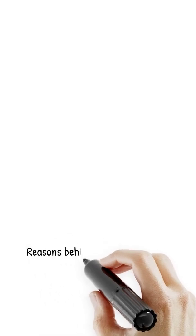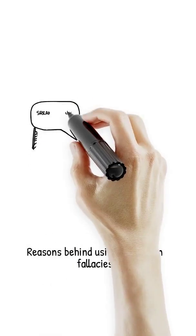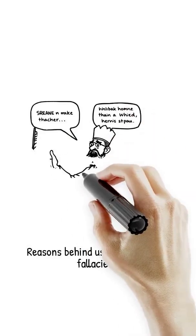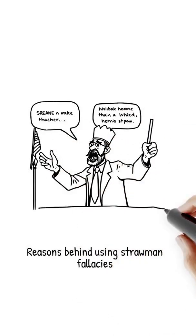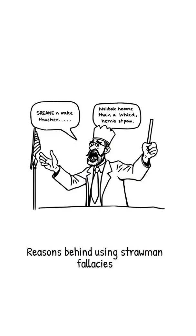Why do people use strawman fallacies? They're powerful. First, emotional appeal — calling something anti-Semitic stirs outrage, rallying audiences against the bad guy. Second, dodging complexity — it's easier to slam hate than debate international law. Third, polarization — it paints opponents as bigots, boosting clicks and political points, like in heated 2025 campus protest coverage.